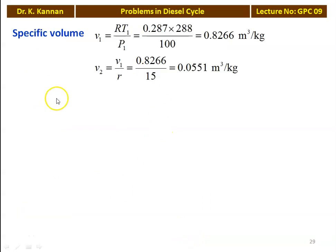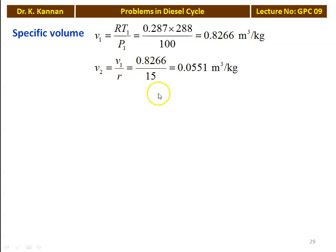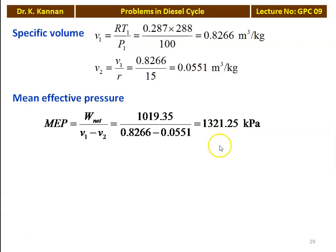We calculate the specific volumes. Initial specific volume V1 equals R·T1 divided by P1: 0.287 into 288 divided by 100 equals 0.8266 meter cube per kilogram. V2 equals V1 divided by R: 0.8266 divided by 15 equals 0.0551 meter cube per kilogram. Mean effective pressure equals net work done divided by swept volume (V1 minus V2): 1019.35 divided by (0.8266 minus 0.0551) equals 1321.25 kilo Pascal.